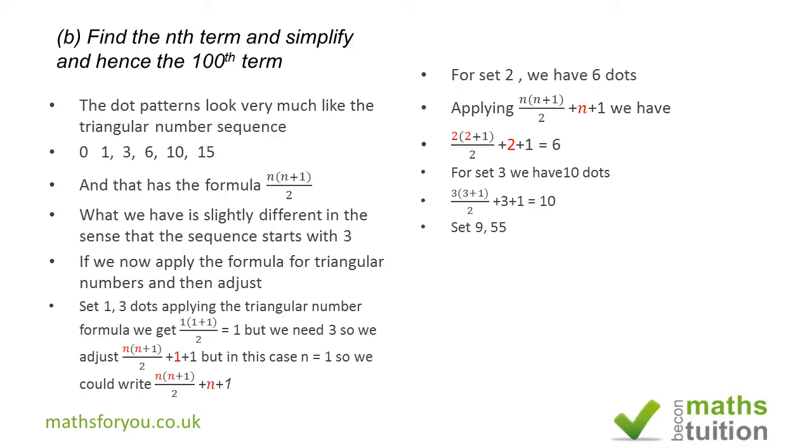Now let's try for the ninth term, for which we had 55. For the ninth term, 9 times 10 is 90, divide by 2 we get 45, 45 plus 9 is 54, 54 plus 1 is 55, so that works as well.